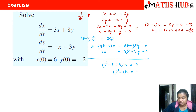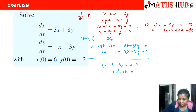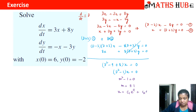This is a second order homogeneous differential equation, so the solution comprises only the complementary part. The auxiliary equation is m² − 1 = 0, giving m = ±1. Therefore x = c₁e^t + c₂e^(−t). This is the value of x.